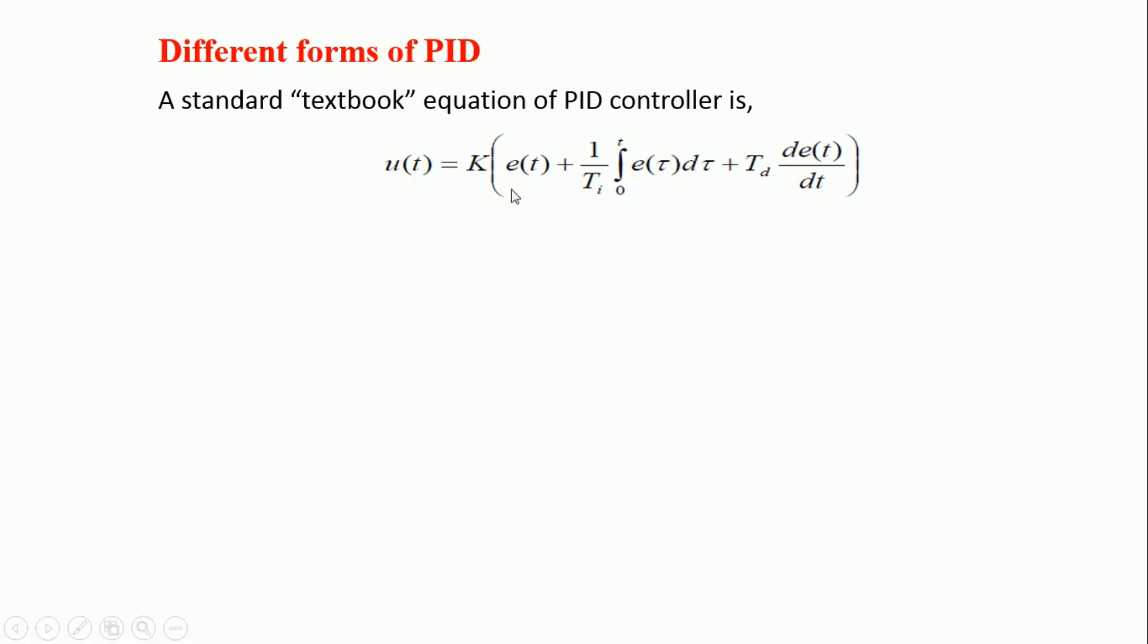Where e(t) is the difference between command and plant output is the controller input, and u(t) is the control variable that is controller output. The three parameters are K, this is the constant K which indicates the proportional gain, integral time and derivative time.